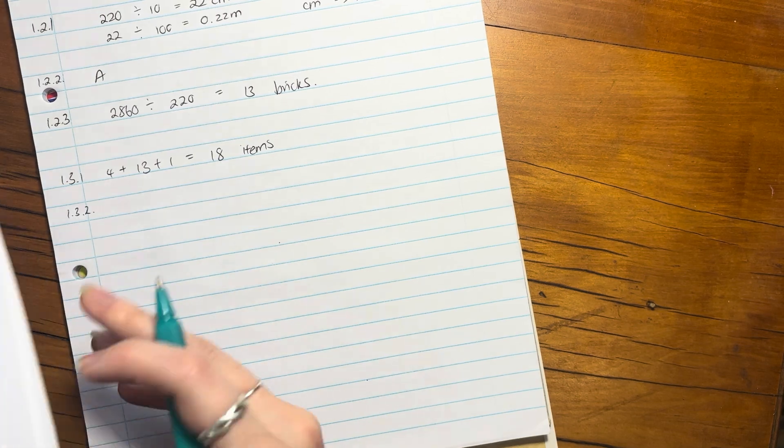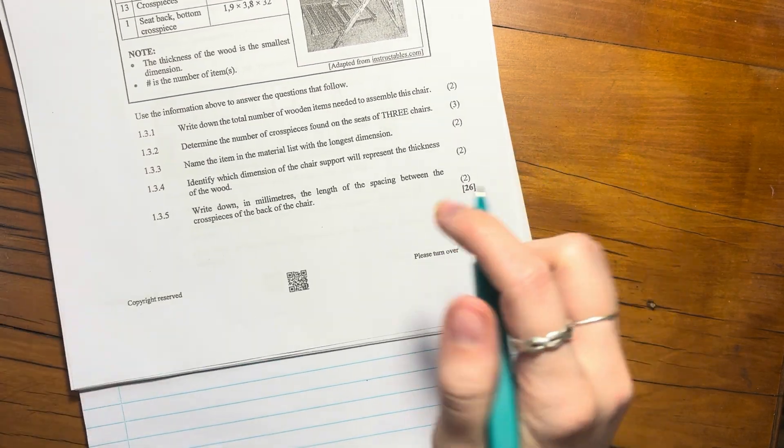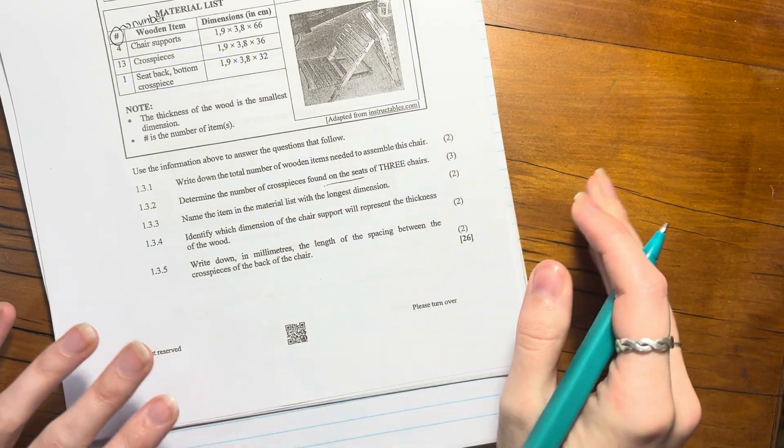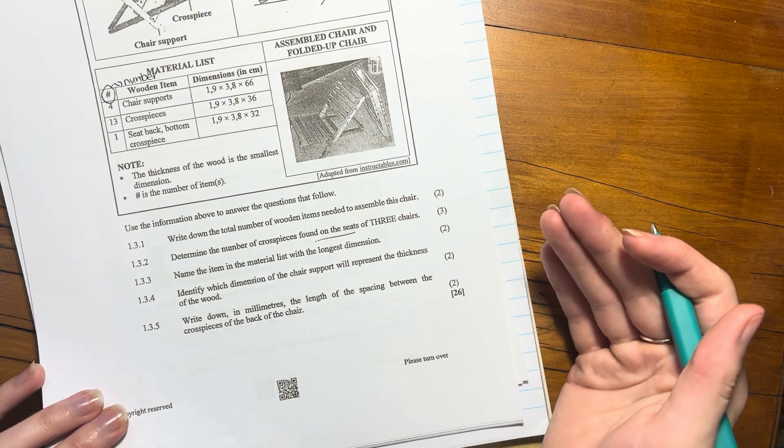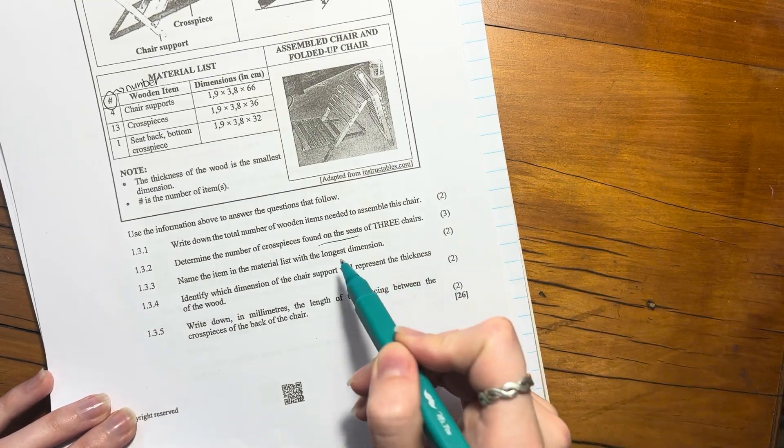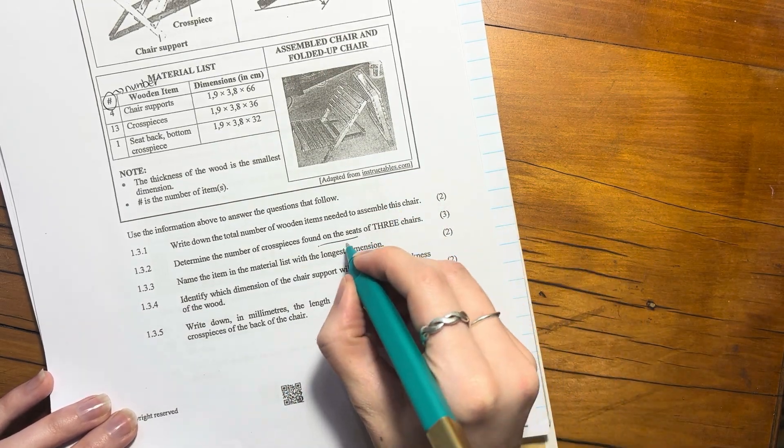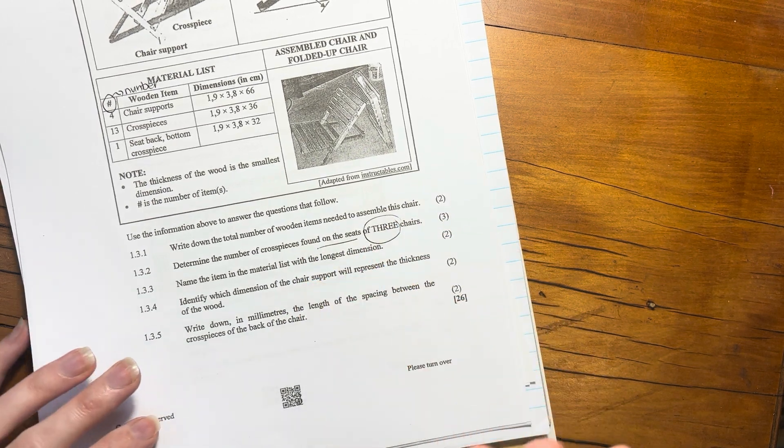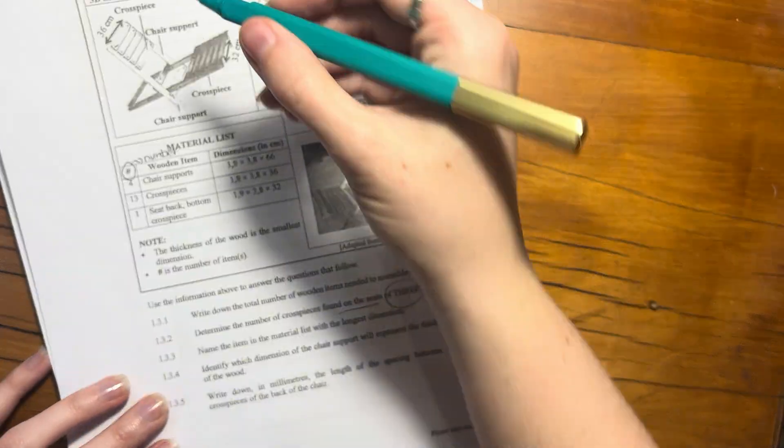Let's move on to the next one. Then it says, determine the number of cross pieces found on the seat. So when I was preparing for this video, I did this question incorrectly because I thought it was talking about the chair back, but it's talking about the seat. And then it says, found on the seat of three chairs. So you can't just be like, there's how many you need for one.